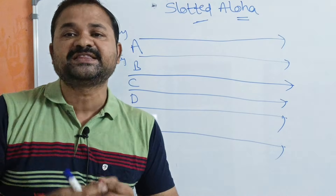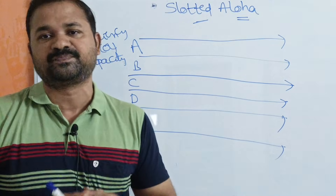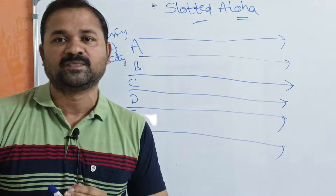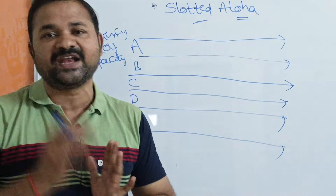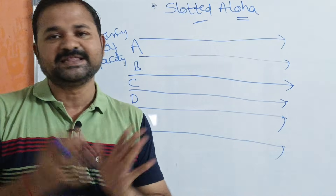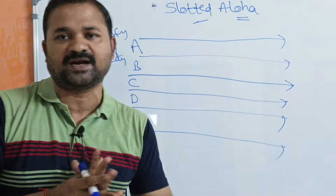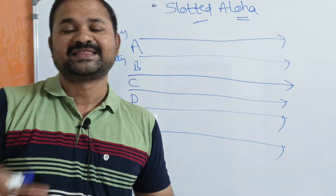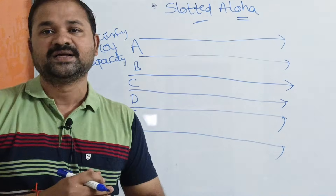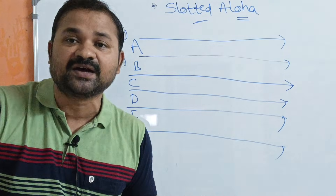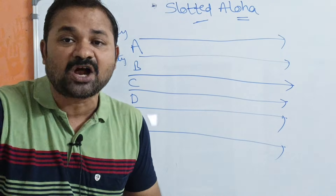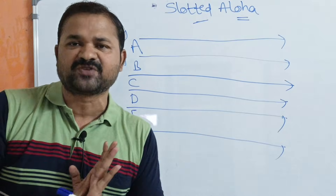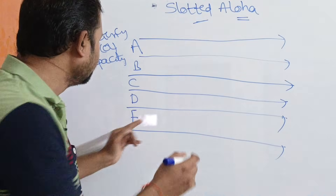In pure ALOHA, a user can send data whenever the data is available. But in slotted ALOHA, when data is available the user cannot send it immediately. The user waits for the end of the current slot, and only at the beginning of the next slot can the user send the data.